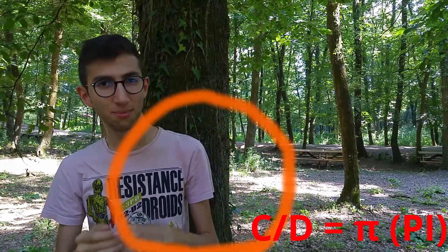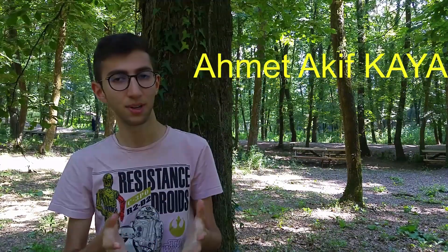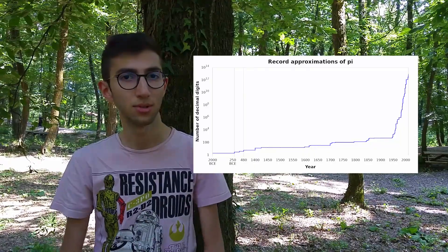Circumference of a circle divided by its diameter gives you a miraculous number called Pi. It goes on like this. Here is the graph showing how it was discovered throughout history.